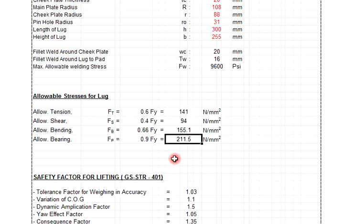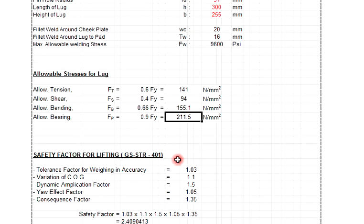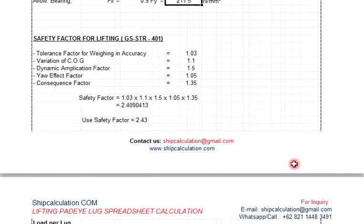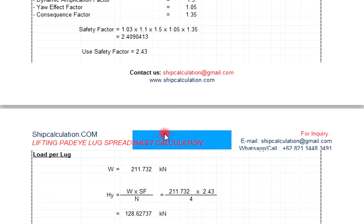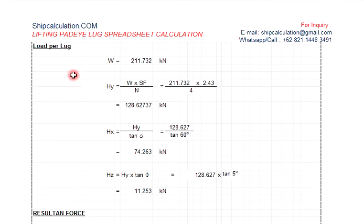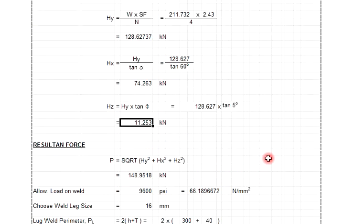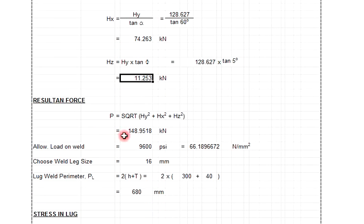This is the formula from the rules using classification standards like DNVGL, ABS, or IACC. This one is the safety factor. From this, the load per lug is 128.253 kilonewtons based on the sling angle of 5 degrees. Resultant force is 148.95 kilonewtons. The allowable load on weld is 66.1.